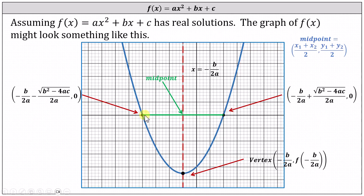The x-intercept on the left would be the ordered pair (−b/2a minus the square root of (b² − 4ac) divided by 2a, 0), and the x-intercept on the right would be the ordered pair (−b/2a plus the square root of (b² − 4ac) divided by 2a, 0).